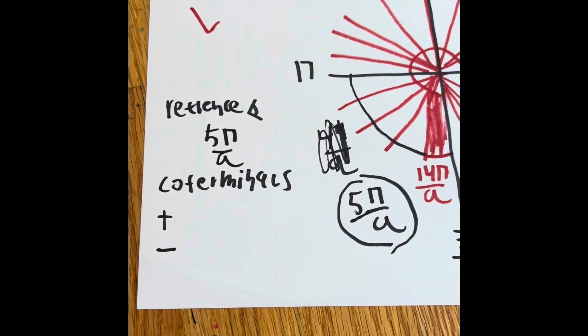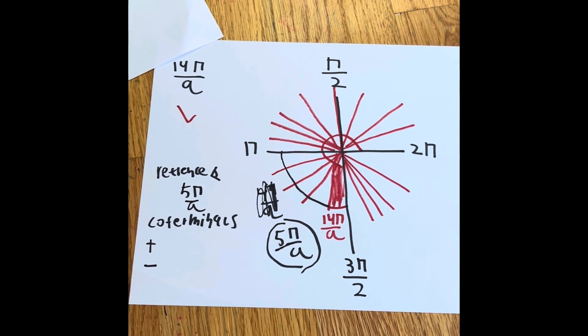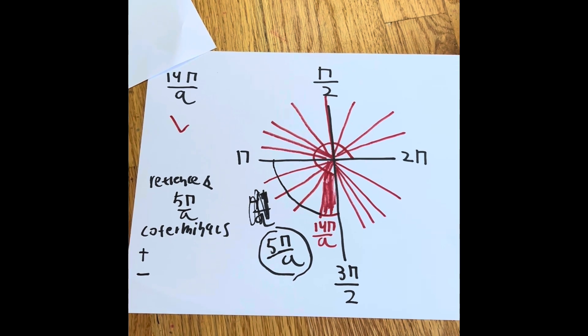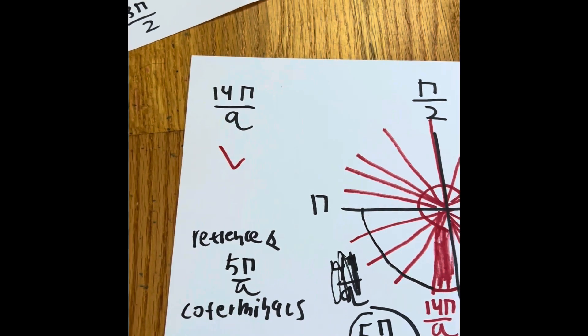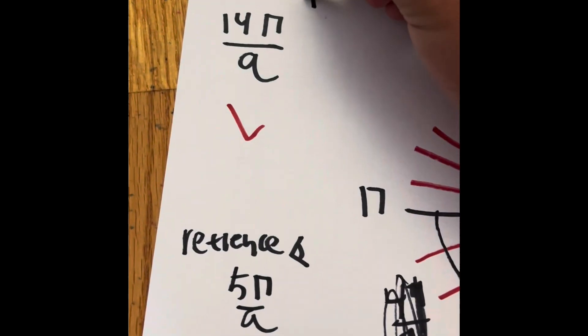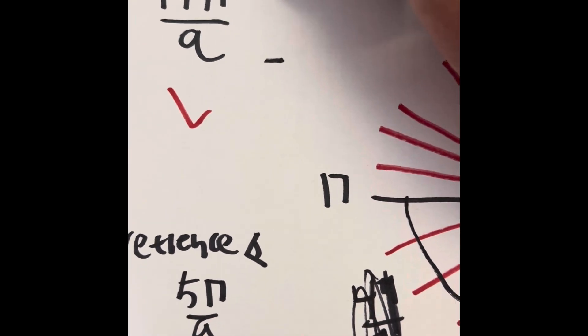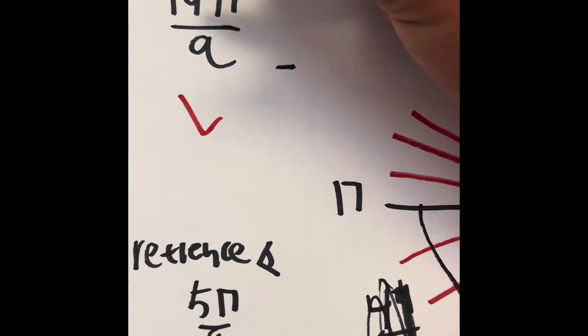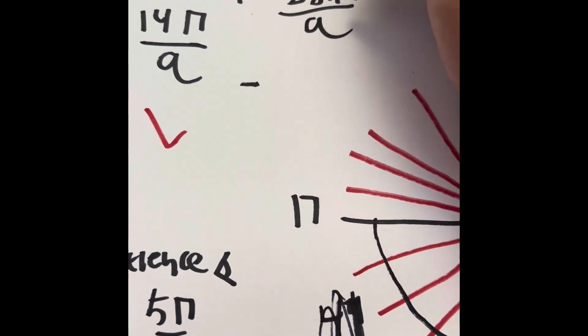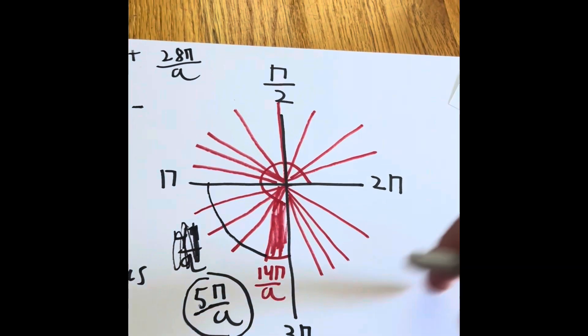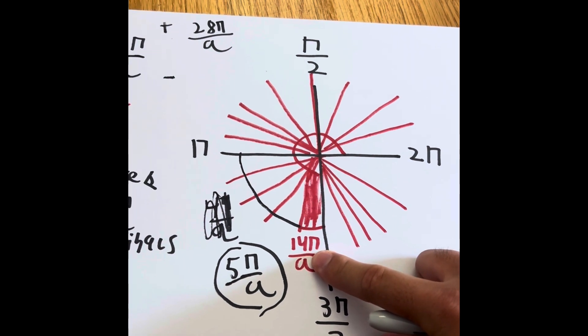The coterminals could be found, you can find the coterminals just by using the fractions as a way to help you. We have 14π over 9. There are two things we can do. We can find a positive and a negative. To find the positive coterminal, what we could do is try to double it. So 14 times 2 is going to be 28. So 28π divided by 9 means that there's going to be two full rotations, and it will leave up to the same space right over here.